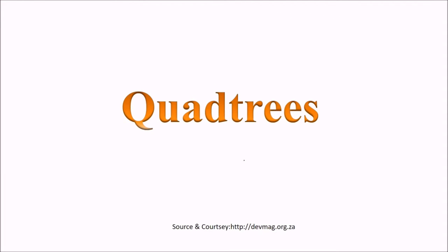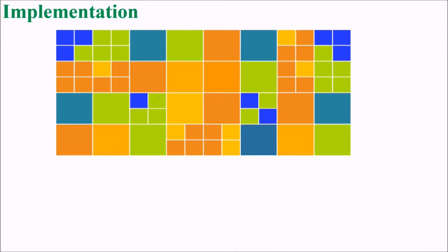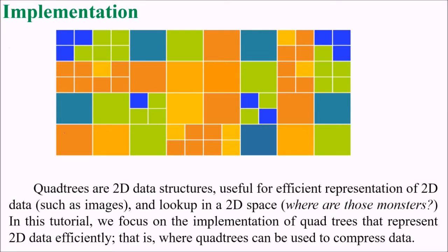We are discussing quad trees and their implementation. Quad trees are 2D data structures — please understand they are 2D data structures — useful for efficient representation of 2D data such as images and lookup in a 2D space. We focus on the implementation of quad trees that represent 2D data efficiently.